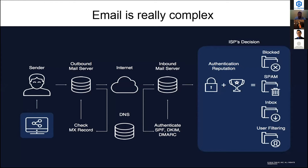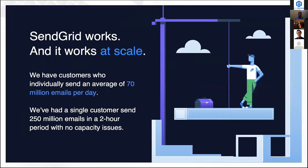Whenever a sender sends an email, we verify with outbound mail services by checking MX and DNS records, then it's sent through a secure internet layer to inbound mail servers. The inbound mail server verifies SPF, DKIM, and DMARC policy. Once verified, it goes to inbox service providers like Gmail, Yahoo, and Outlook. Those ISPs check authentication and domain reputation, then decide whether to send the email to spam, inbox, personalized folders, or block it entirely.